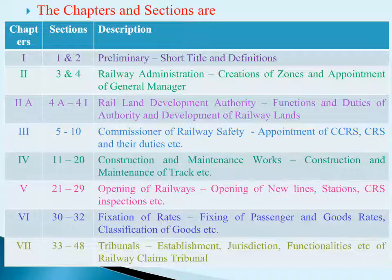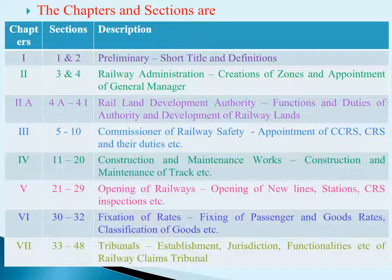Chapter 4: Construction and Maintenance of Works has 10 sections, Sections 11 to 20. In this chapter, construction and maintenance works of tracks, new railway lines, sidings, etc. are laid down.